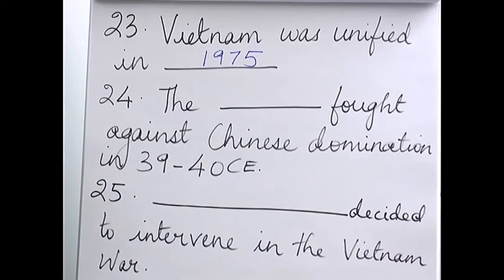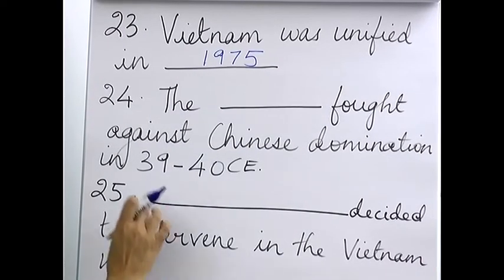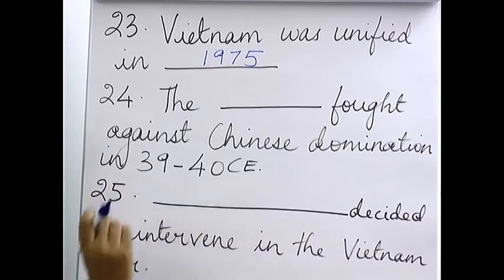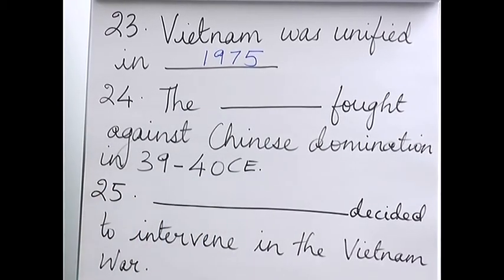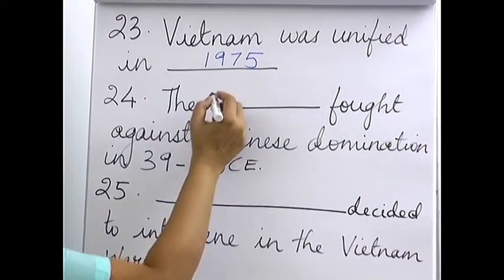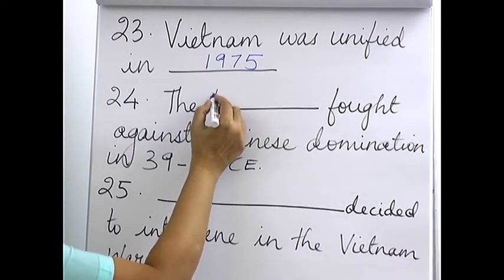Twenty-fourth: the Trung sisters fought against Chinese domination in 39 and 40 CE. Before the French arrived, there was Chinese domination.